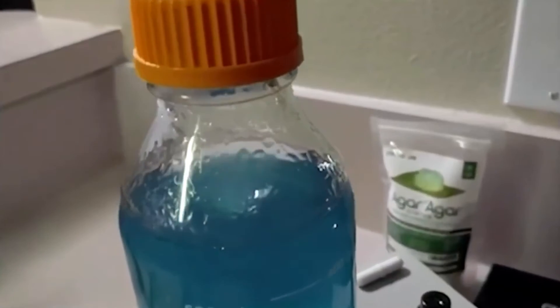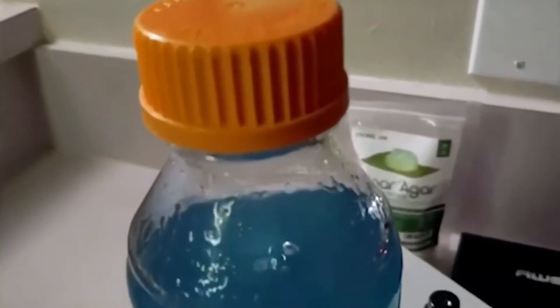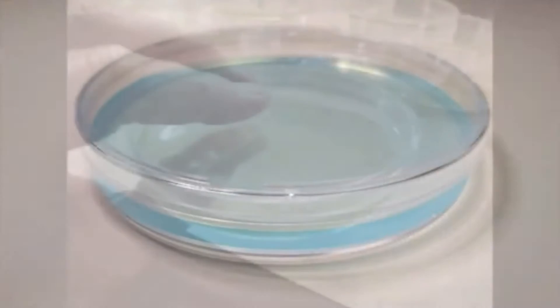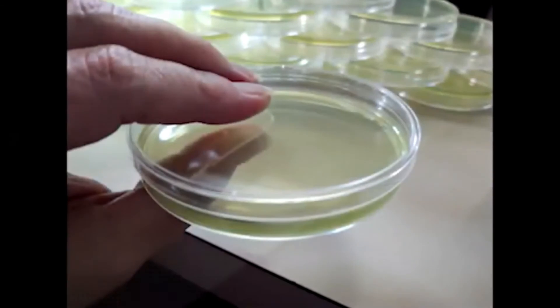When cloning or working with spores, we have found water agar to be the best recipe to start with. We then transfer to MEA plates. Then a final transfer to MYA gives us the rhizomorphic growth we desire.